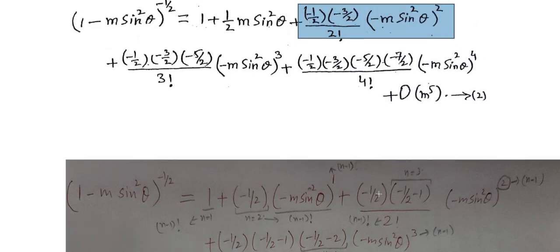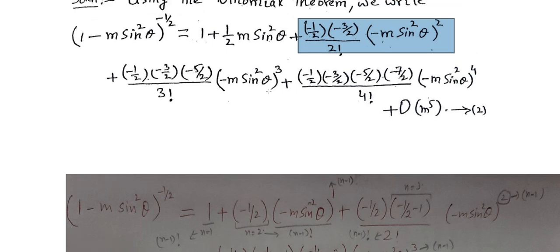Continuing the expansion: n(n−1) over two factorial gives the coefficient for (m sin²θ)². Similarly, n(n−1)(n−2) over three factorial times (m sin²θ)³, and n(n−1)(n−2)(n−3) over four factorial times (m sin²θ)⁴, plus order of m⁵. The next term would contribute order m⁵.